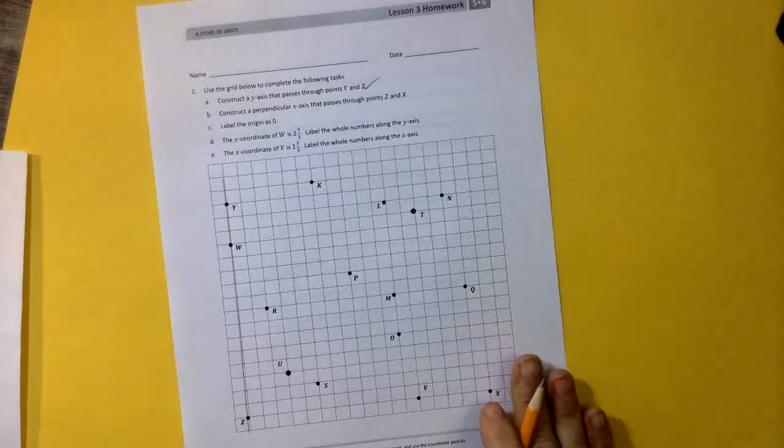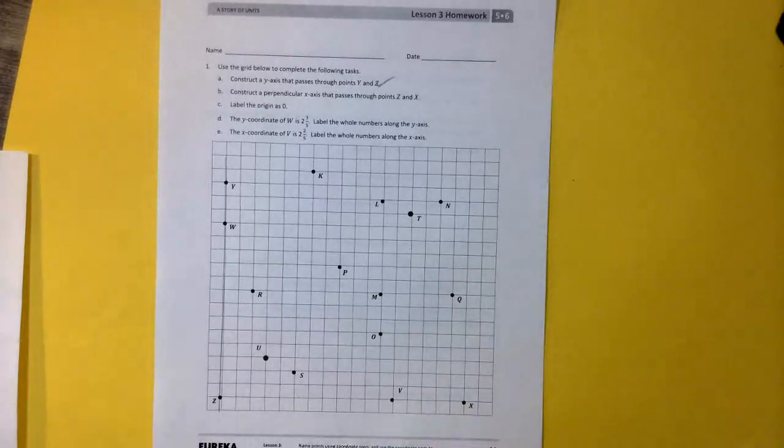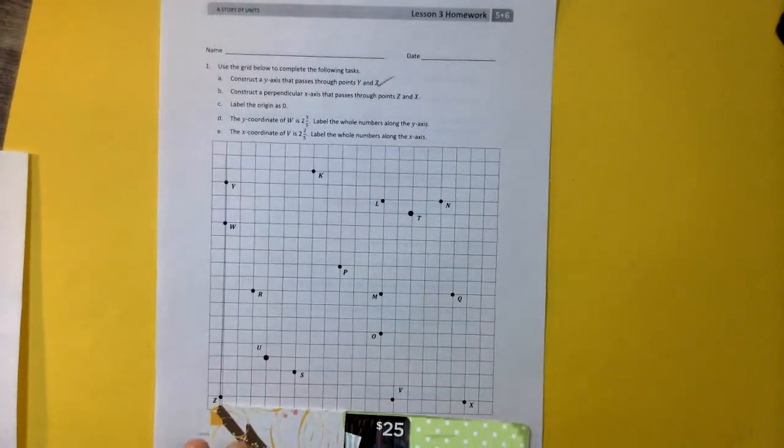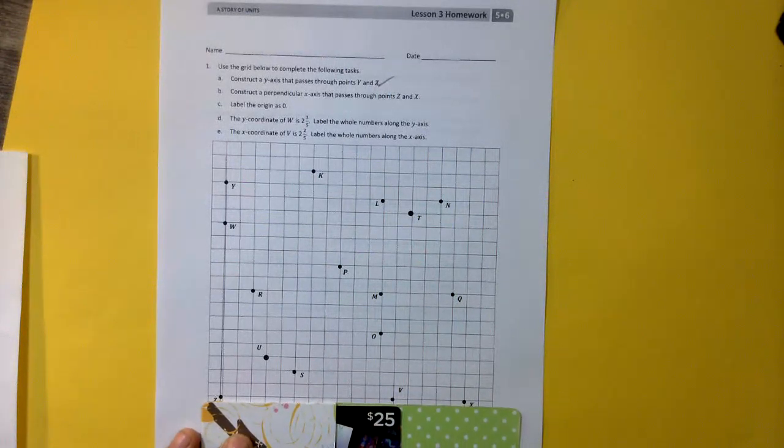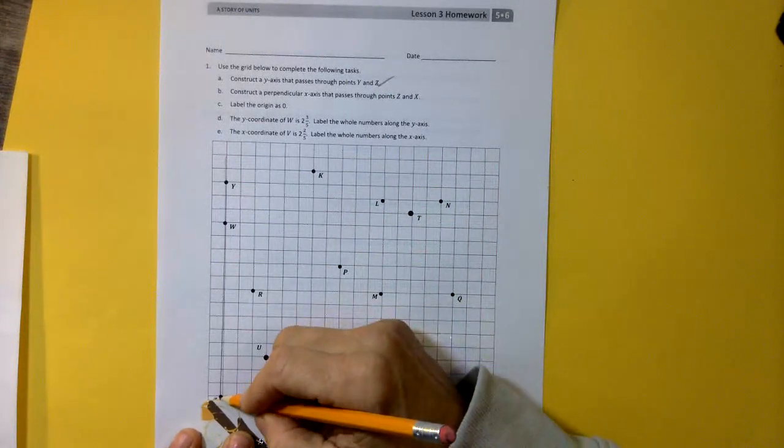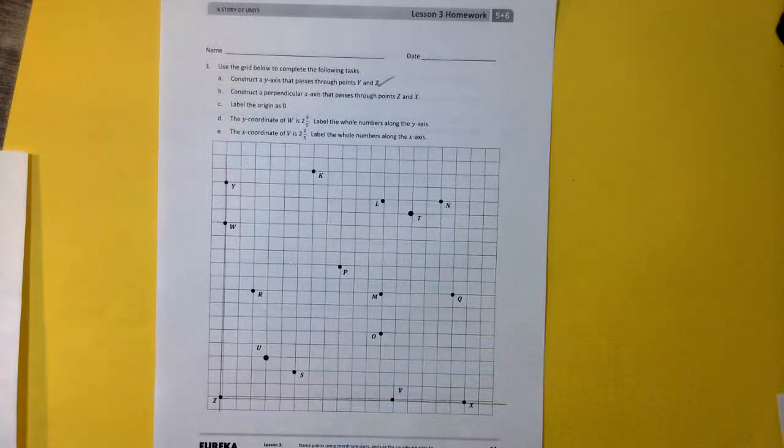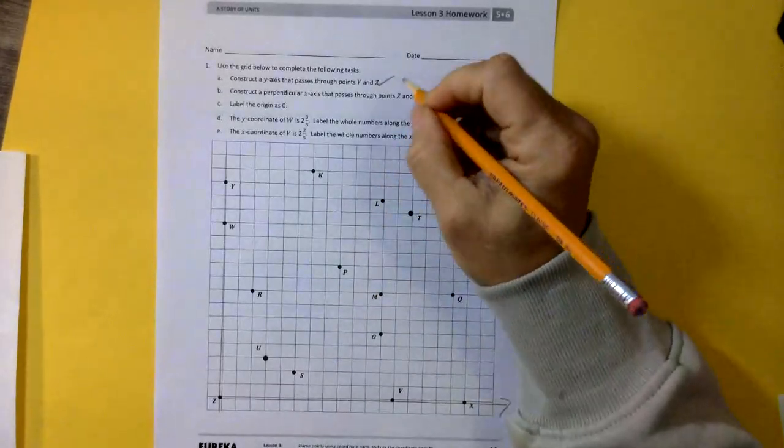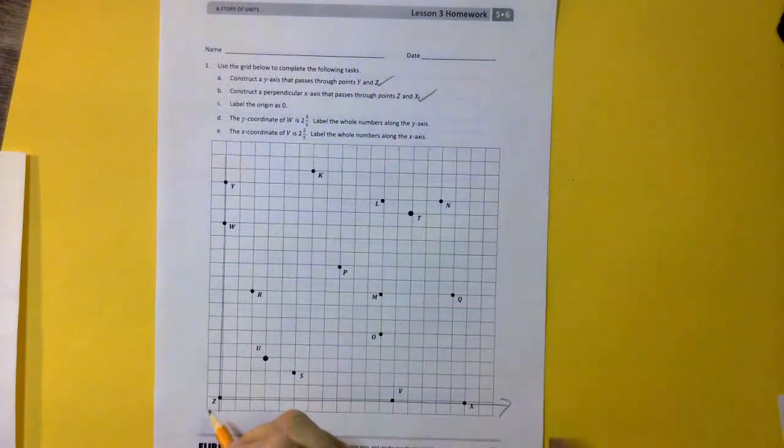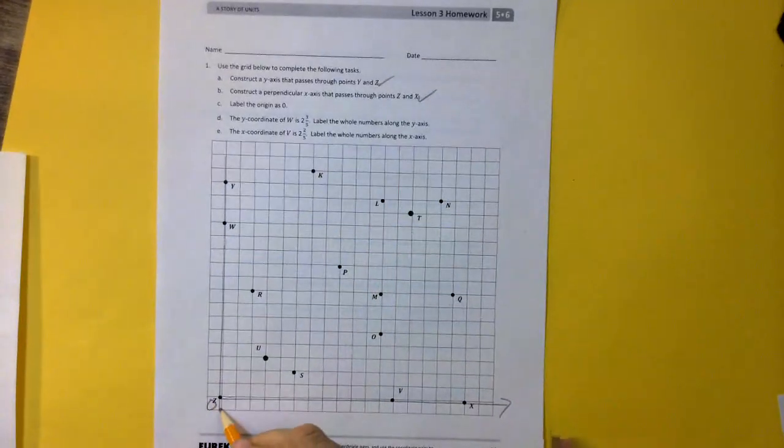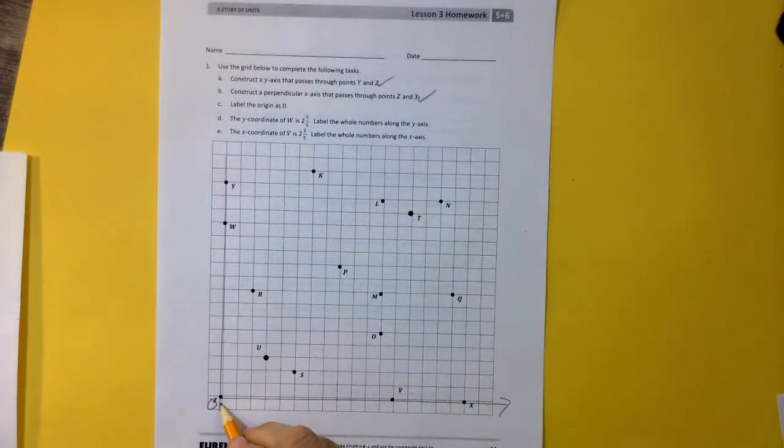Construct a perpendicular line for the x-axis that passes through z and x. There's z and x. Okay, good. So we've got that done. Label the origin as 0. We know that the origin is where everything begins. It is at 0, 0, or in this case, just 0.